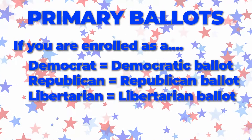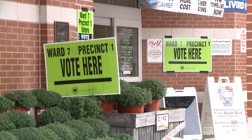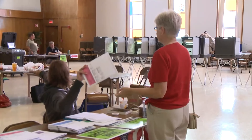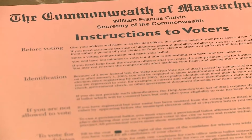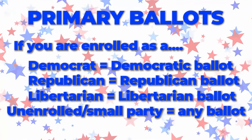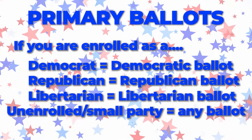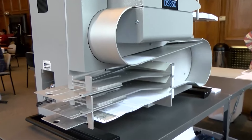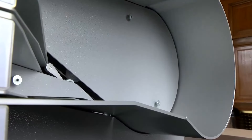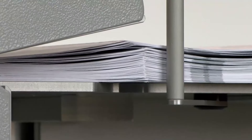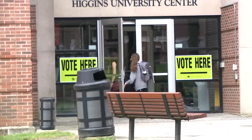Unenrolled voters or members of small political designations can vote in the primary and you do not need to register with the party. Unenrolled voters must choose which ballot type they want to vote. Voters may only vote one ballot, so unenrolled voters will choose a Democrat, Republican, or Libertarian ballot. Choosing a party ballot as an unenrolled voter does not enroll you in a party.